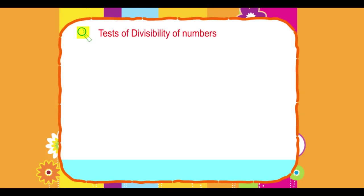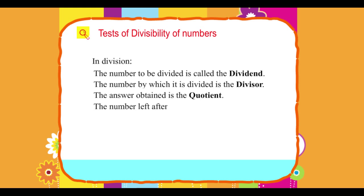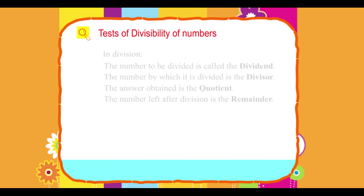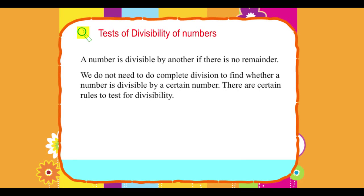Tests of Divisibility of Numbers. In division, the number to be divided is called the dividend. The number by which it is divided is the divisor. The answer obtained is the quotient. The number left after division is the remainder. A number is divisible by another if there is no remainder. We do not need to do complete division to find whether a number is divisible by a certain number. There are certain rules to test for divisibility.